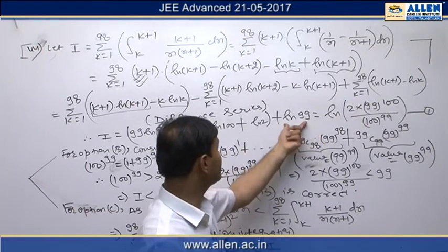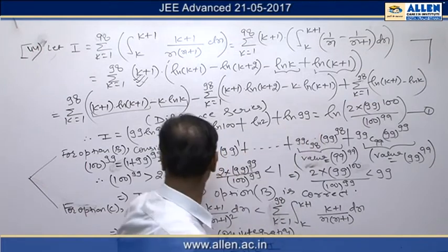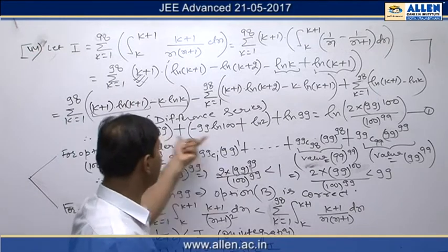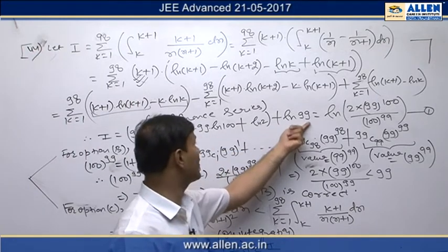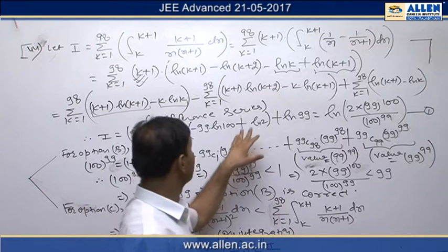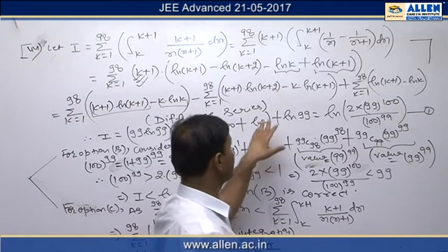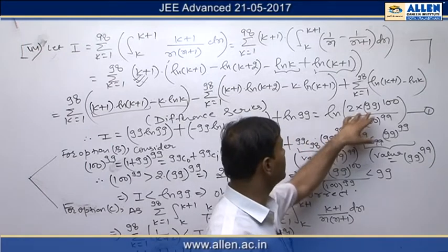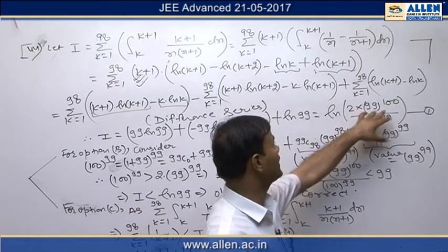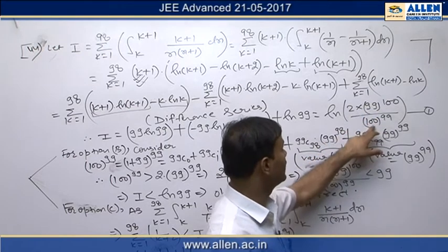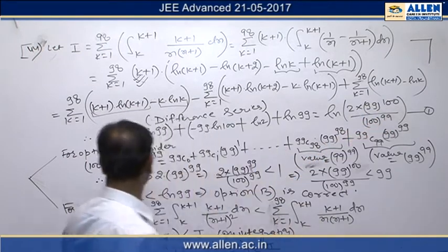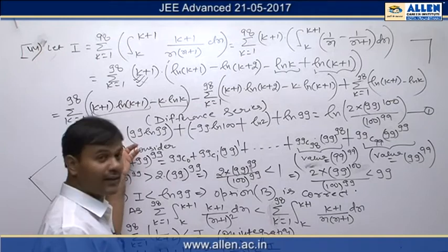When we sum these difference series, we get 99·ln(99). From the second difference series we get minus 99·ln(100) plus ln(2), and from the last difference series we get the sum ln(99). Adding 99·ln(99) and ln(99) gives 100·ln(99). Using properties of logarithms, the entire result is ln(2 · 99^100 / 100^99), which is the value of our integral.